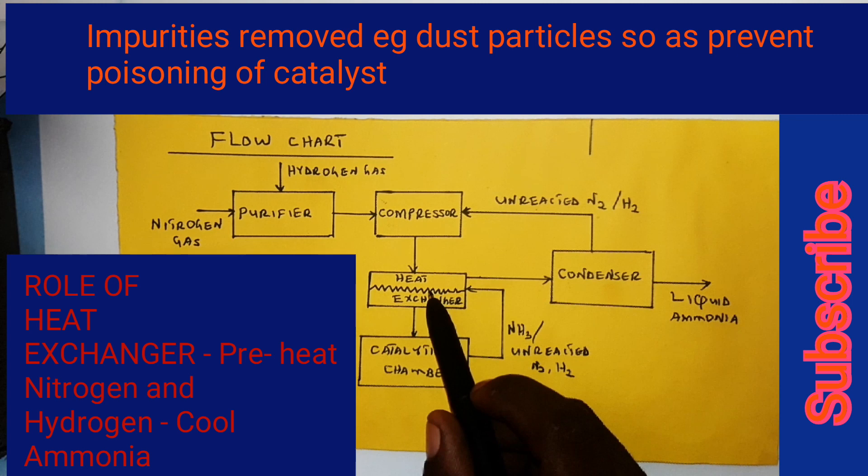After the ammonia and the nitrogen-hydrogen mixture have been cooled, they are pumped into the condenser. The condenser liquefies the ammonia gas. The unreacted hydrogen and nitrogen are then recycled back to the compressor. The reason for recycling is to reduce the cost of production and also to minimize wastage. Thank you for the lesson.